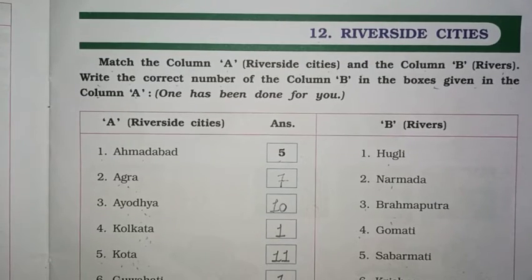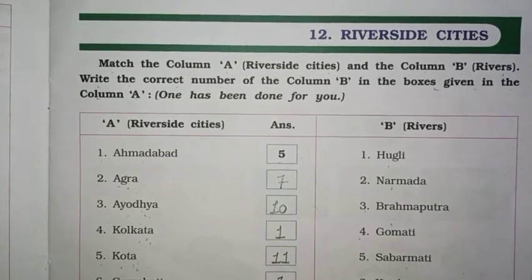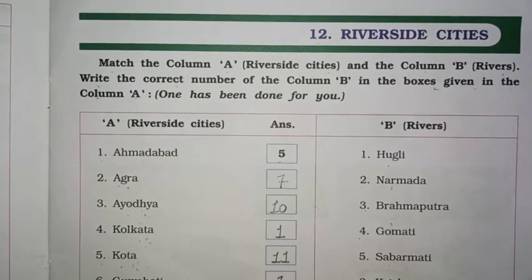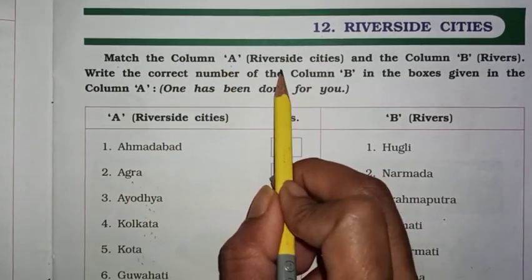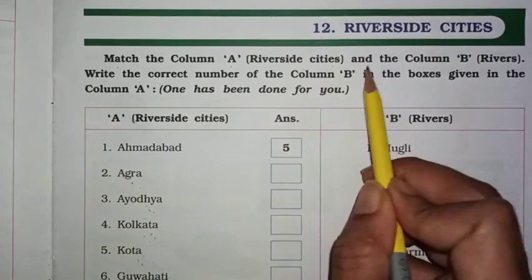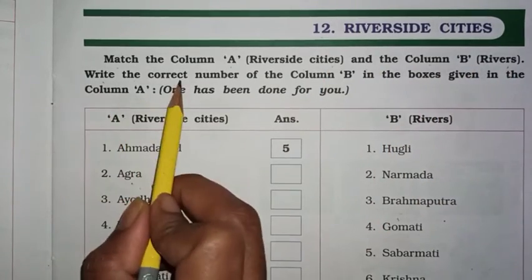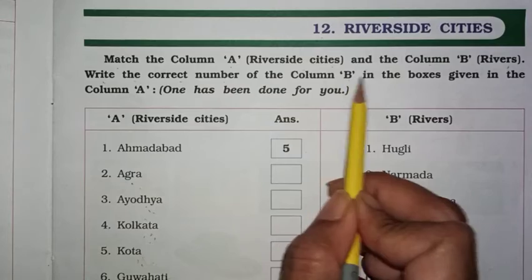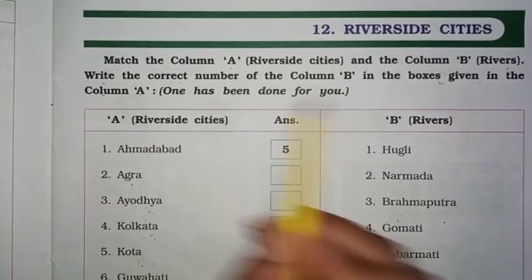Hello students, today I am going to teach you Subject GK in Standard 4, Unit 12, Riverside Cities. Match the Column A, Riverside Cities, and Column B, Rivers. Write the correct number of Column B in the boxes given in Column A.